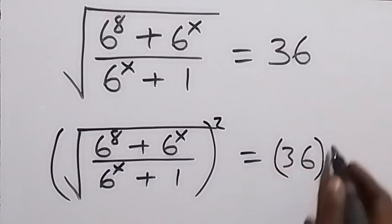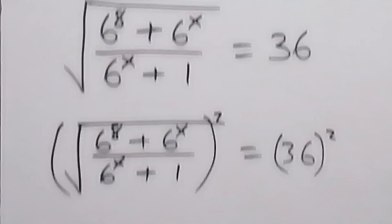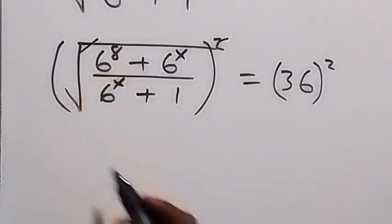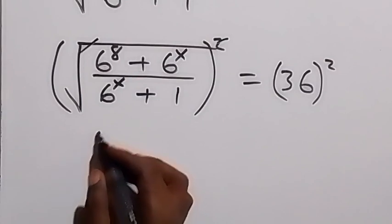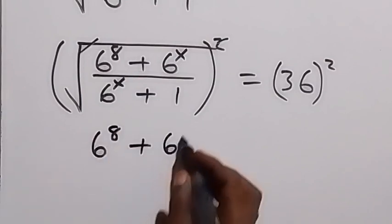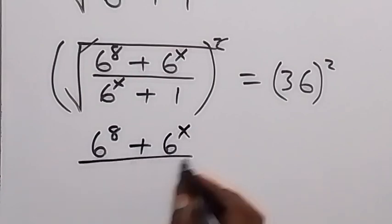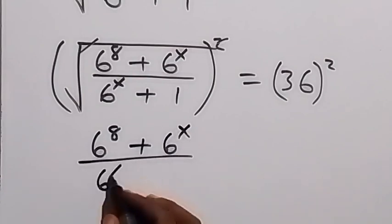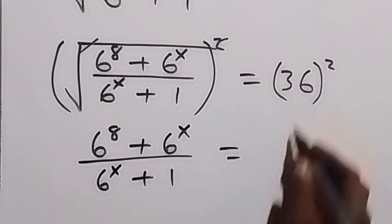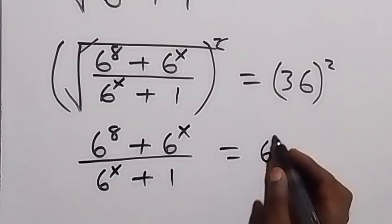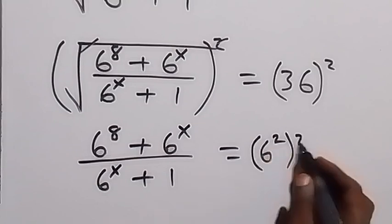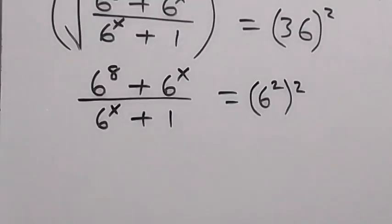From the left hand side, squaring cancels the square root and we are left with 6 raised to power 8 plus 6 raised to power x, divided by 6 raised to power x plus 1. Here let's write 36 as 6 squared, then raised to power 2.